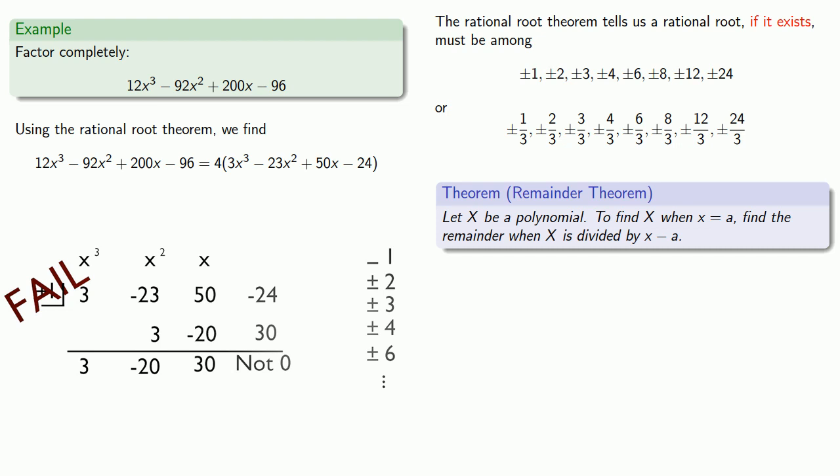The next thing we could try is negative 1. So we'll clear out our table and find the remainder when we divide by x minus negative 1. And again, since the remainder is not 0, we don't actually care what it is. We know that negative 1 is not a root. So we can try 2. So we'll check by applying our synthetic division algorithm and finding the remainder. So +2 is not a root. We'll check negative 2 and use our synthetic division to find the remainder when we're dividing by x minus negative 2. Still not a root.